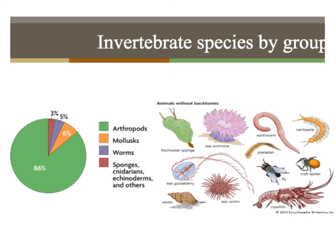This slide shows a pie chart of what we were just talking about — 95% versus 5%. Of invertebrates, 86% are arthropods, 6% are mollusks, 5% are worms, 3% are sponges. Then we have cnidarians — that C is silent — echinoderms, and other animals. Those are the invertebrates by group, and we'll talk about those different groups.